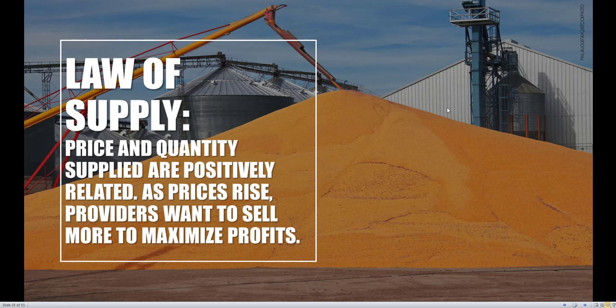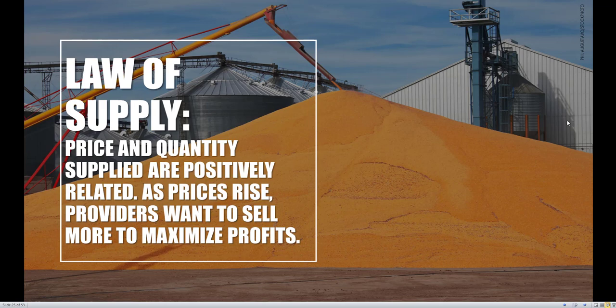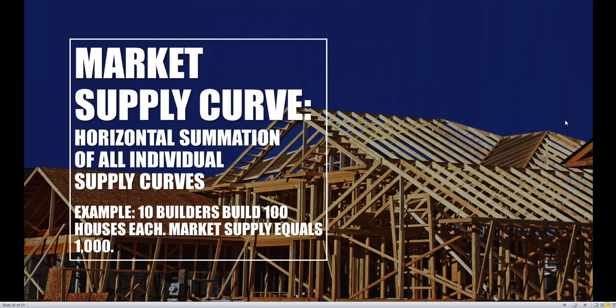If we want to build up the entire market supply curve, remember this may just be for one particular supplier or producer. To build up the entire market for a particular good or service, just like on the demand side, we need to horizontally sum every single individual supplier or firm. Every individual firm has their own individual supply curve. To build up the entire market supply curve, use horizontal summation — for every single price, go ahead and add up the quantity. It's the same exact methodology as the demand side.